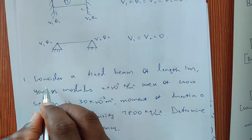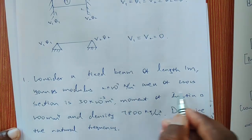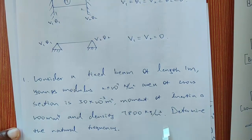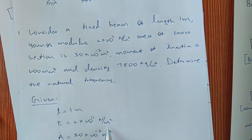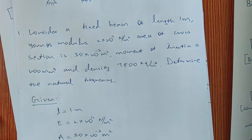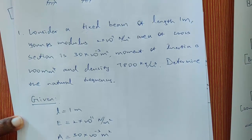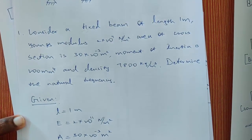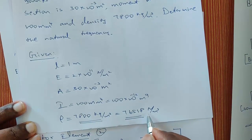This is an example problem. Consider a fixed beam of length 1 meter. The given data are: length L = 1 m, Young's modulus E = 2×10¹¹ N/m², area of cross-section A = 30×10⁻³ m², moment of inertia I = 100 mm⁴ (converted to meter⁴), and density = 7800 kg/m³ (mass density). In the equation we substitute the weight density, so I have multiplied by 9.81 to get the weight density.